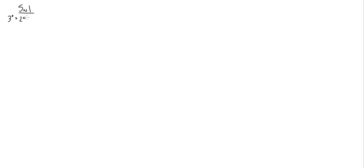So the first thing is the degree of the alkyl halide. We prefer 3° over 2°, quite a bit over 1°. One degree is pretty bad, and methyl halides just don't really work at all — they're really, really bad. So 3° and 2° are good; 1° and methyl are really bad. I would not use methyl at all, or 1°.